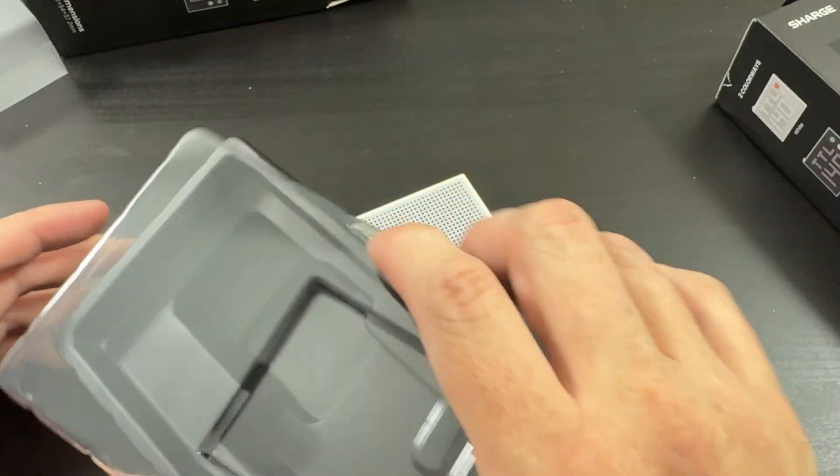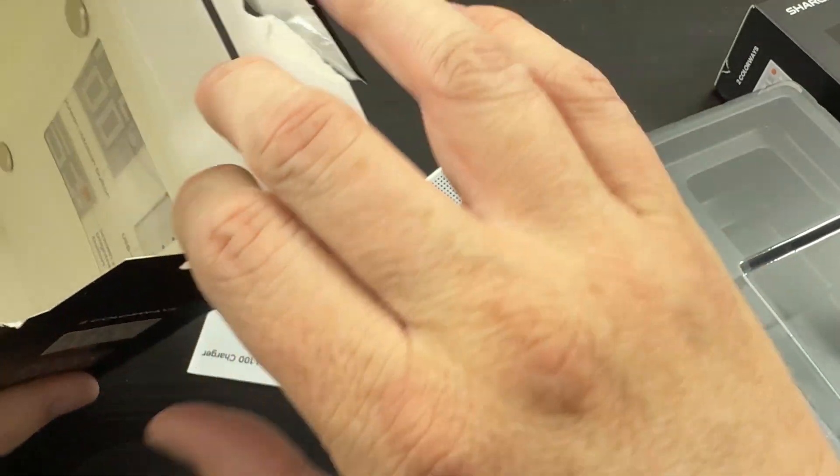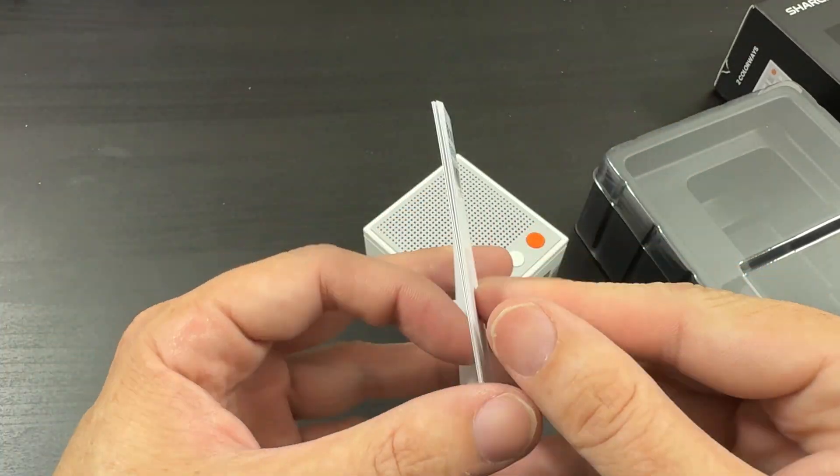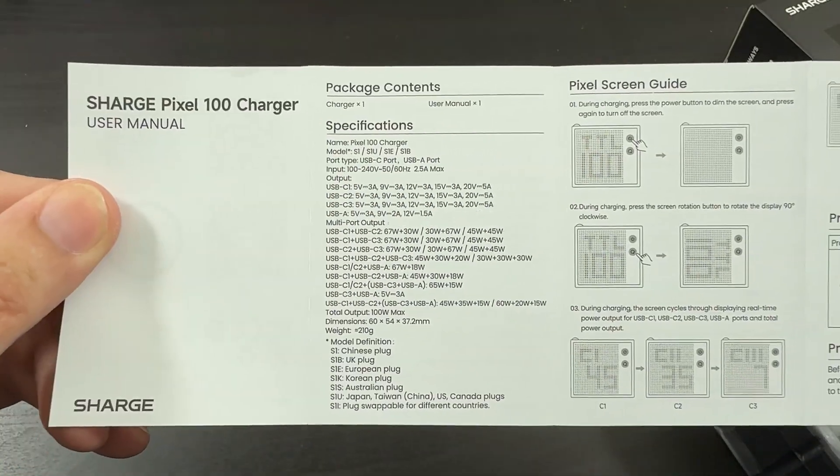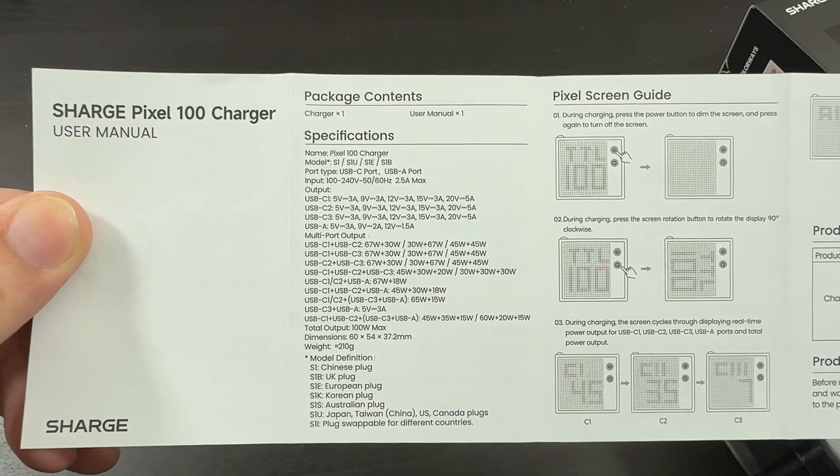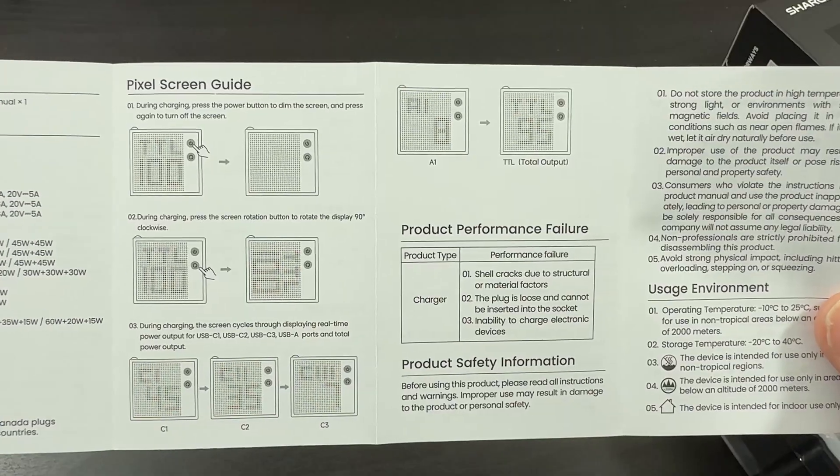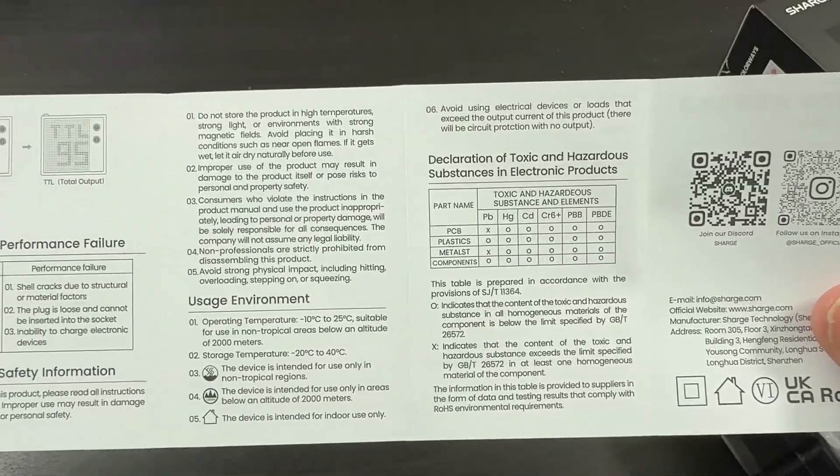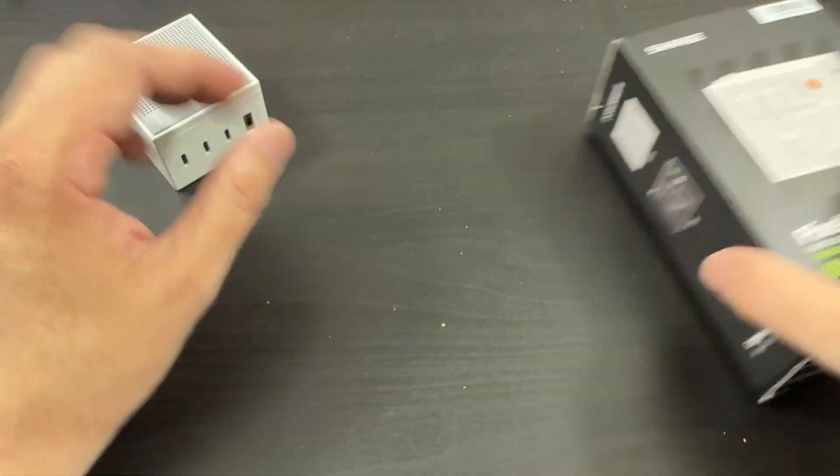That's pretty simple. We do have an instruction guide there, but honestly, it's probably just going to be super simple because you literally just plug stuff into it. We've got some more specifications. This is specifically the 100-watt version. And then we have the screen guide, so you can rotate the screen. Cool.